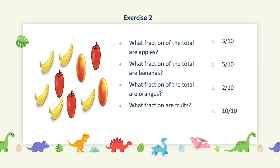The last question is asking: what's the fraction of fruits? Now, from the picture, we see that every single item is a fruit. Hence, our numerator would be the total amount of fruits, which is 10, and the denominator, which is the total number of fruits, would also be 10. Hence, our fraction would be 10 out of 10.